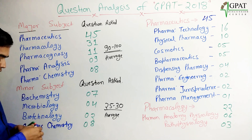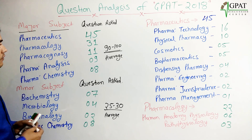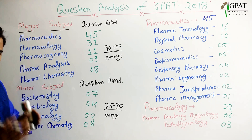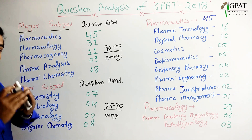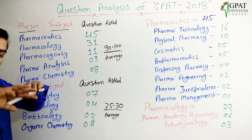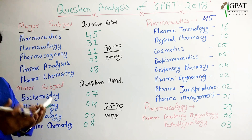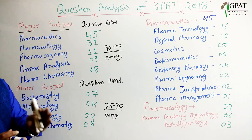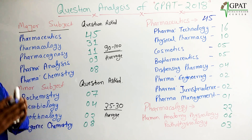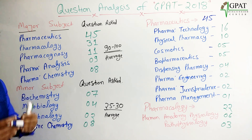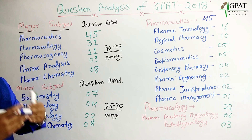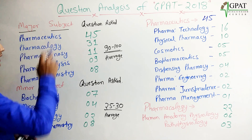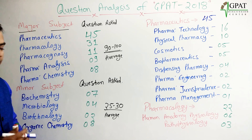45 questions were asked from pharmaceutics. Pharmaceutics is not a single subject, but it means all the pharmaceutics — pharmaceutics first, second, third, and fourth — all that you have studied in your last four years. So, combined, pharmaceutics questions asked: 45.